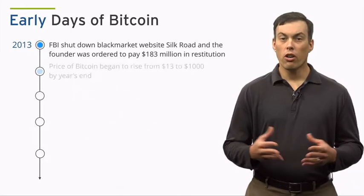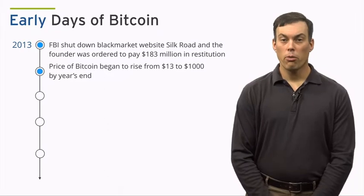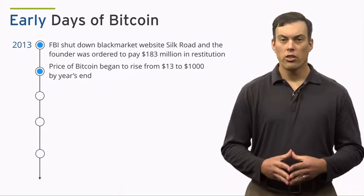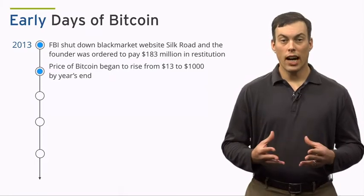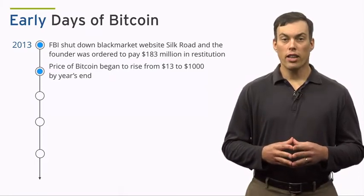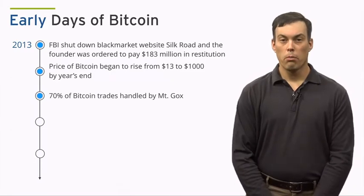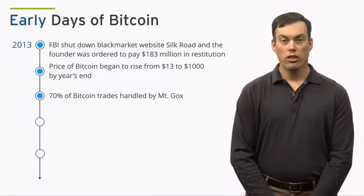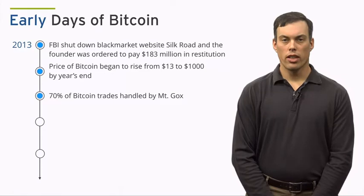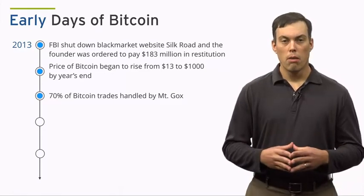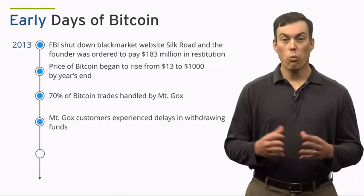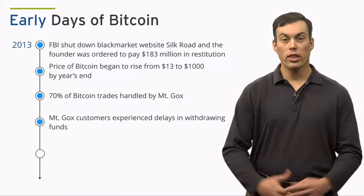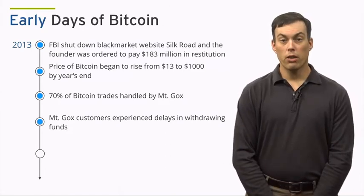2013 is also when the price of Bitcoin began to increase, climbing from $13 at the start of the year to nearly $1,000 at its peak towards the end of the year. At the time, online exchange Mt. Gox handled 70% of the world's Bitcoin trades. Beginning in April, Mt. Gox started experiencing technical difficulties and had to suspend trading for a few days for what they called a market cool-down. By November of 2013, Mt. Gox customers were experiencing delays of weeks to months in withdrawing funds from their accounts and cashing out had become difficult to impossible.